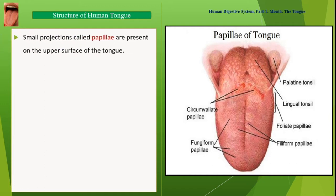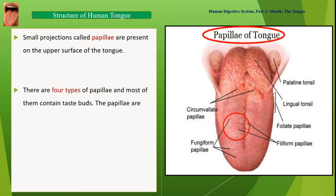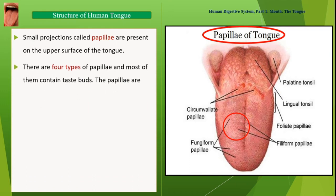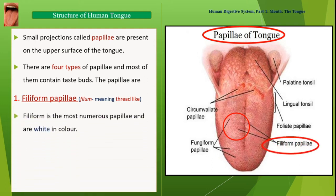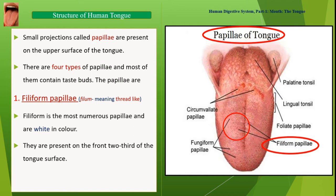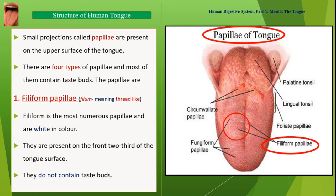Small projections called Papillae are present on the upper surface of the tongue. There are four types of papillae and most of them contain taste buds. The first are Filiform papillae, the most numerous papillae, white in color. They are present on the front two-thirds of the tongue surface and do not contain taste buds.